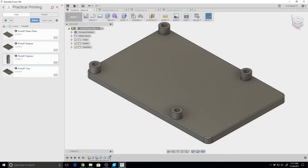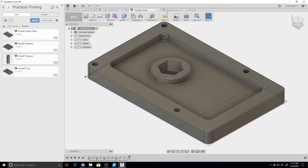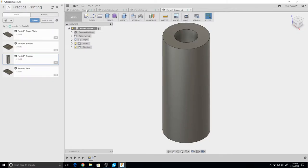Okay, so here we are in Fusion 360. Essentially, there's four pieces to this that need to be 3D printed. There's the pie plate, the bottom, the top, and then four of these spacers. And I'll show you the designs of each piece.